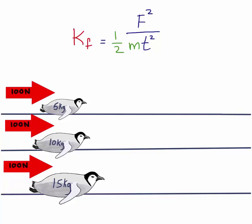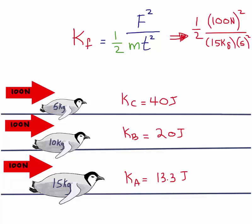So, to get the answers, simply plug the known values into the variables and we get 40 joules for Corrine, 20 joules for Bert, and 13.3 joules for Anna. So, the penguin with the smallest mass will have the largest kinetic energy.